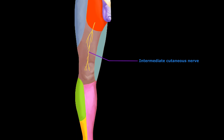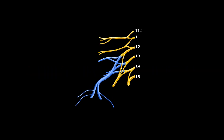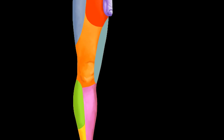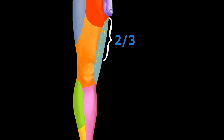The fifth nerve is the medial cutaneous nerve of the thigh. Like the intermediate cutaneous nerve, it is also a branch of the anterior division of the femoral nerve. It divides into anterior and posterior divisions. The medial cutaneous nerve of the thigh supplies the skin of the medial side of the lower two-thirds of the thigh and also the upper one-third of the leg.